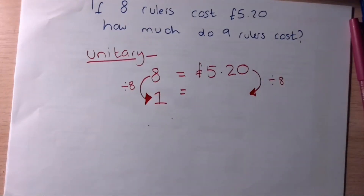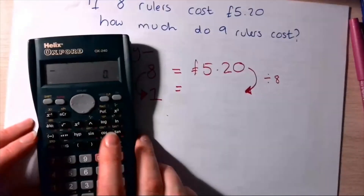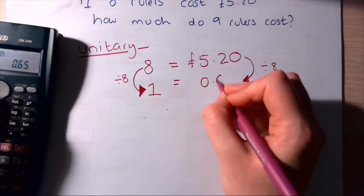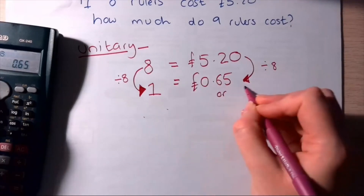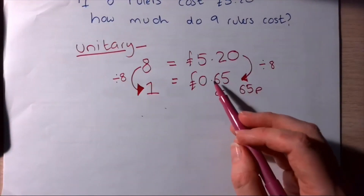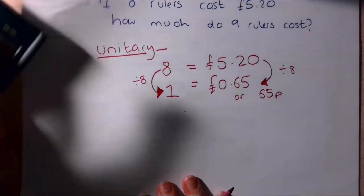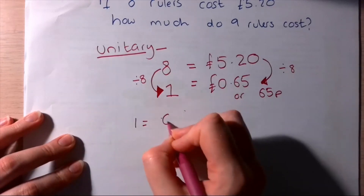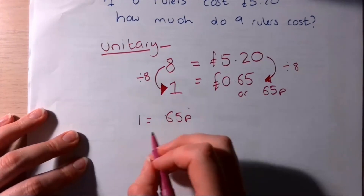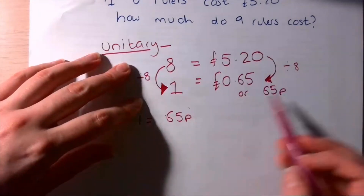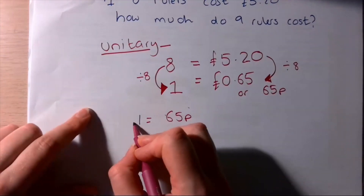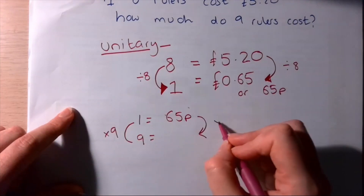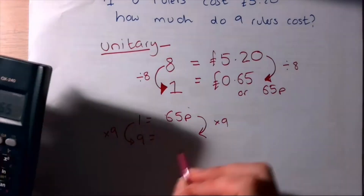Using a calculator: five pounds twenty divided by eight is sixty-five pence — not point six five pounds. I prefer working in pence to avoid dealing with decimals. So one ruler equals sixty-five pence. We want nine rulers: how do we get from one to nine? We multiply by nine, so we do sixty-five pence times nine on the other side as well.